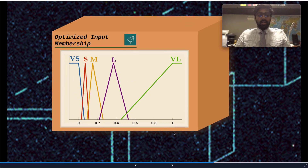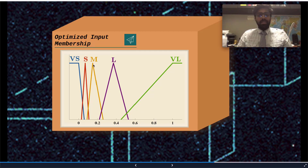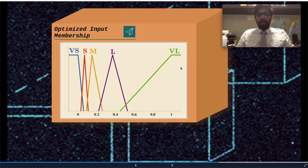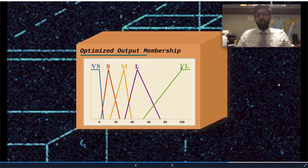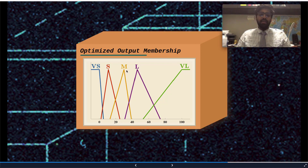Here is our optimized input membership function using our proposed strategy, where VS stands for very small, S stands for small, M stands for medium, L stands for large, and VL stands for very large. And here we see the optimized output membership function with the same labels: very small, small, medium, large, and very large.